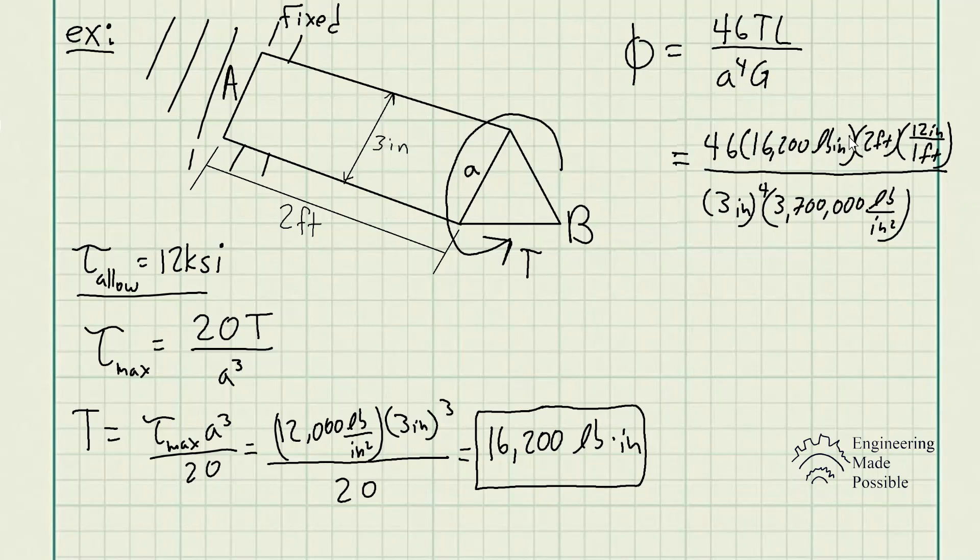Keep in mind, keep your units consistent. So I went ahead and converted the feet into inches. So 12 inches is equal to 1 foot to cancel out the feet. Divide by 3 inch to the fourth power. And the shear modulus, which is 3.7 million or 3,700,000 pounds per square inch.